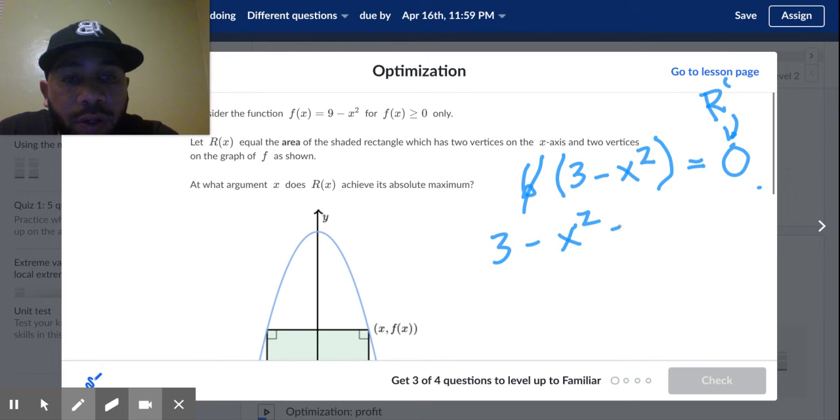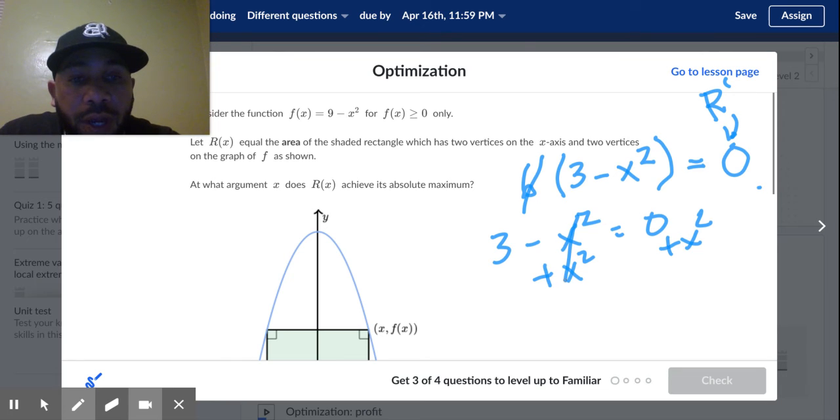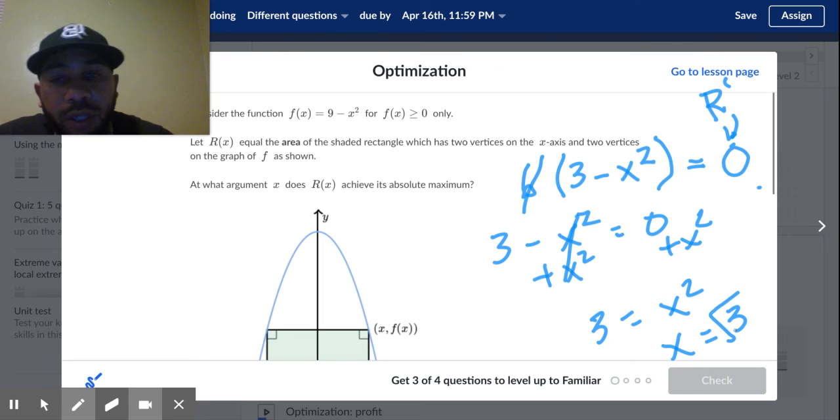I'm going to go ahead and add x squared on both sides. I haven't done anything crazy. I don't even think I'm gonna finish the problem. 3 equals x squared. x equals the square root of 3.